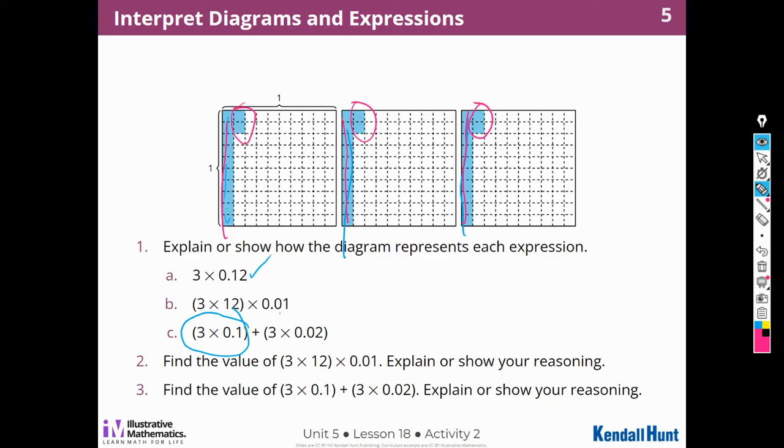Find the value of 3 times 12 times one-hundredth and explain or show your reasoning. So that would be one-tenth, two-tenths, three-tenths, and then two, four, six hundredths, right? And if I did 12 times three, I would get 36, and I know that they have to be in the hundredths place because it's 12 hundredths, 36 hundredths. So that's how I thought of number two.